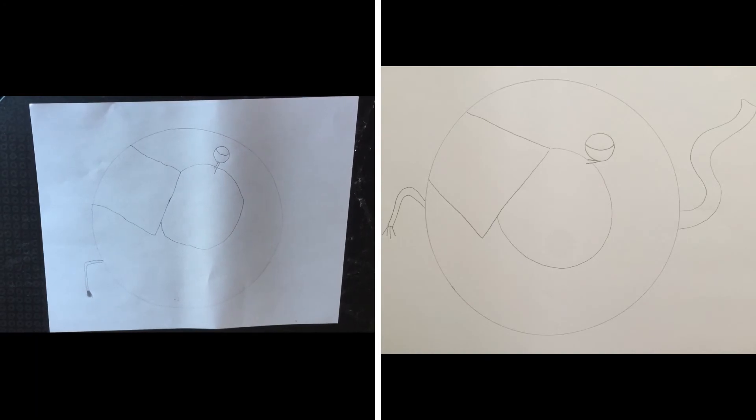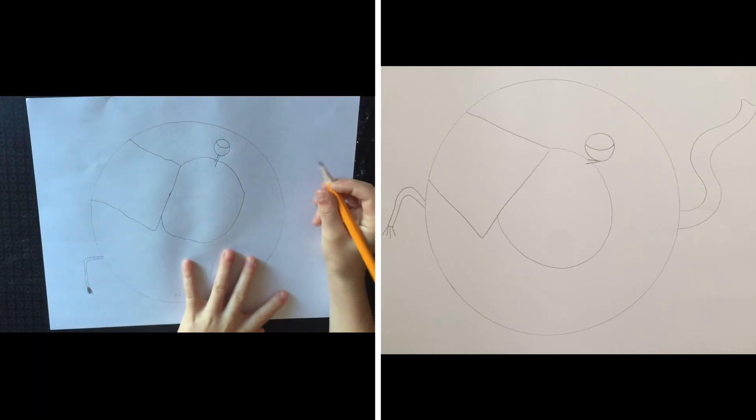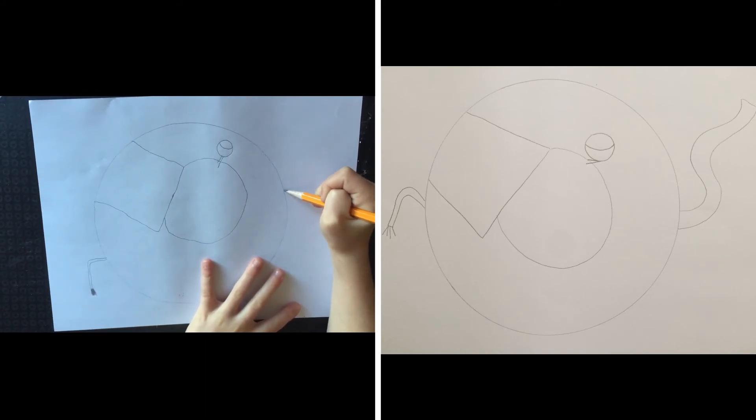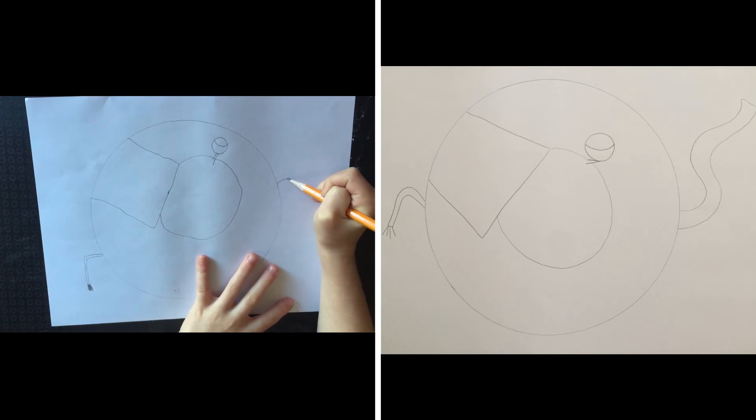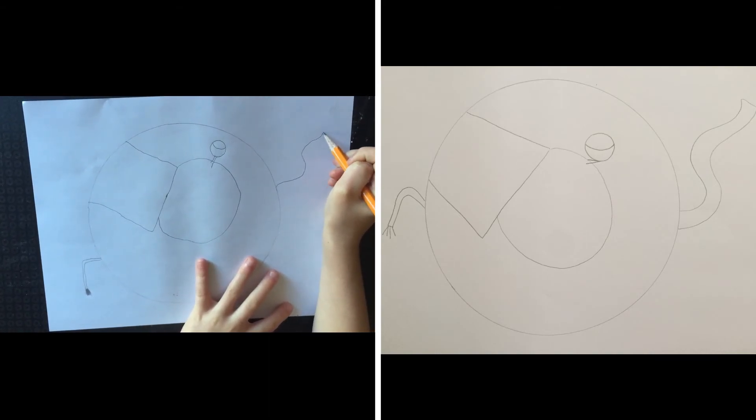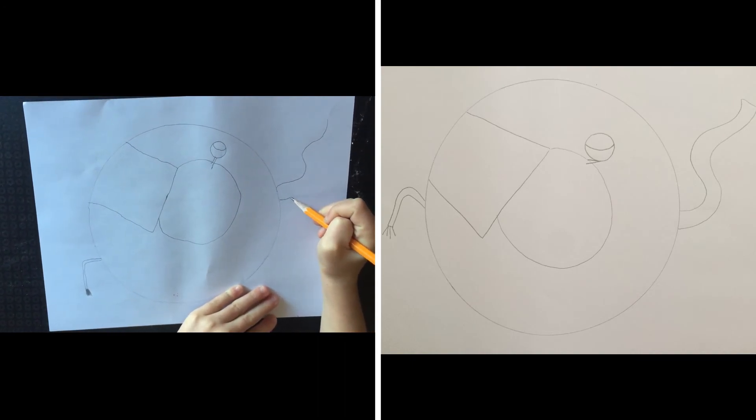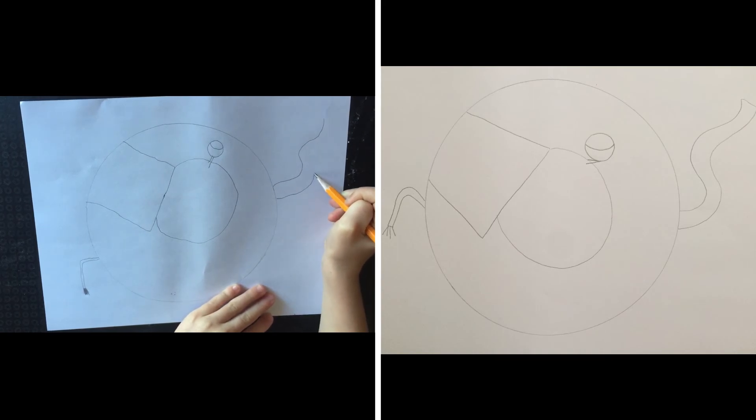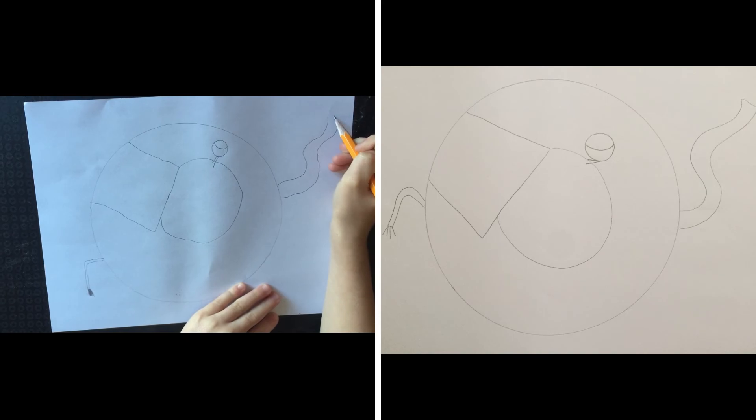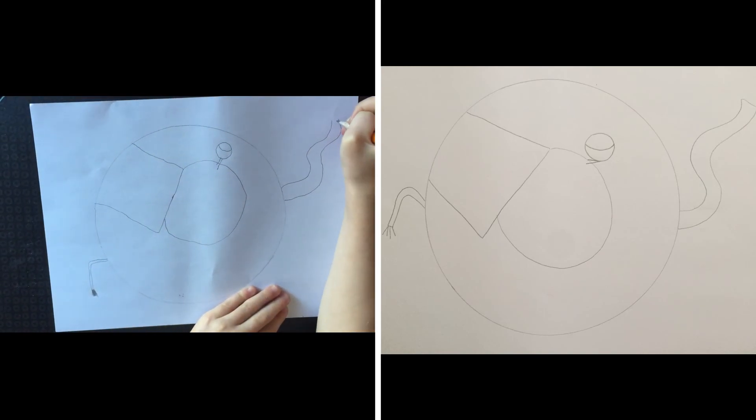We're almost done. We need to add his trunk. So on the other side of the circle, we're going to make an S type shape going up. Yeah, like a wiggly line. And we're going to make it thick. So we'll go back and double the line. Good job. And put a little top connecting the two.